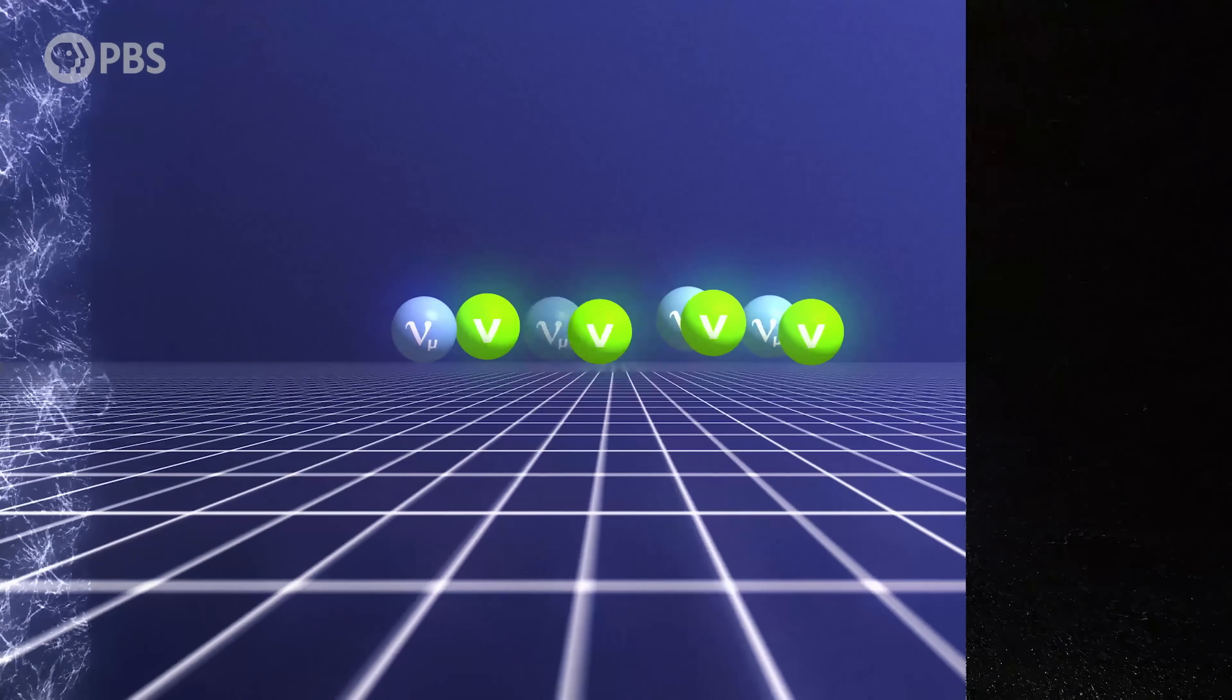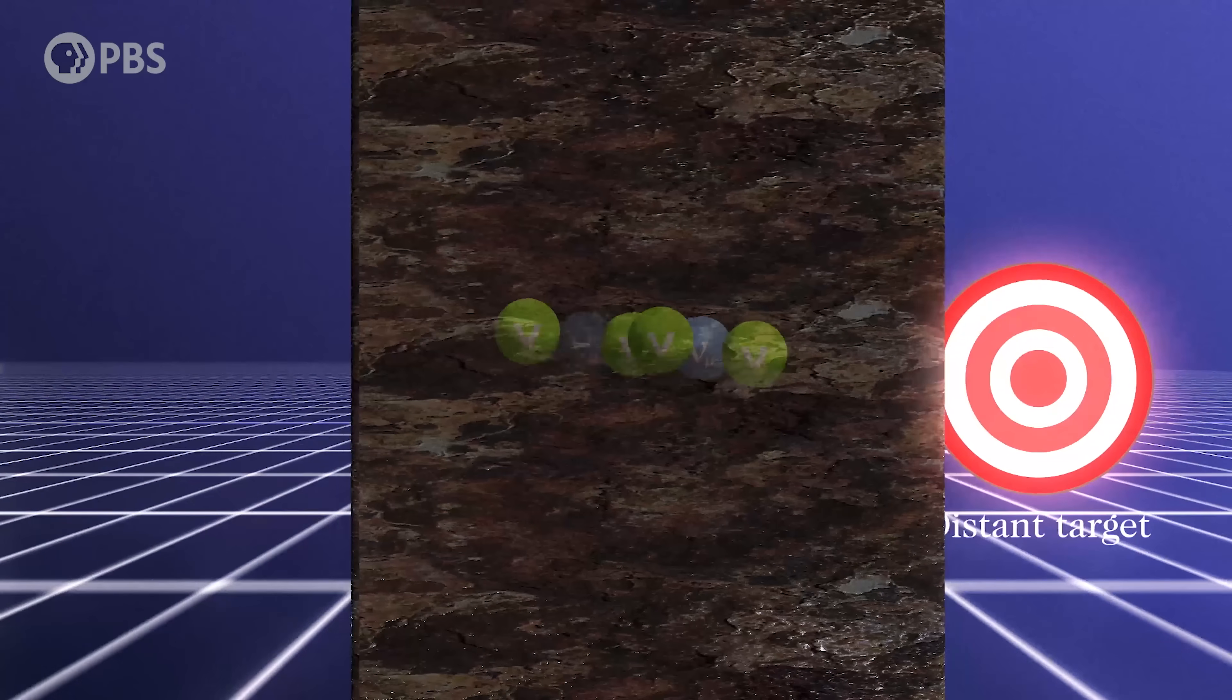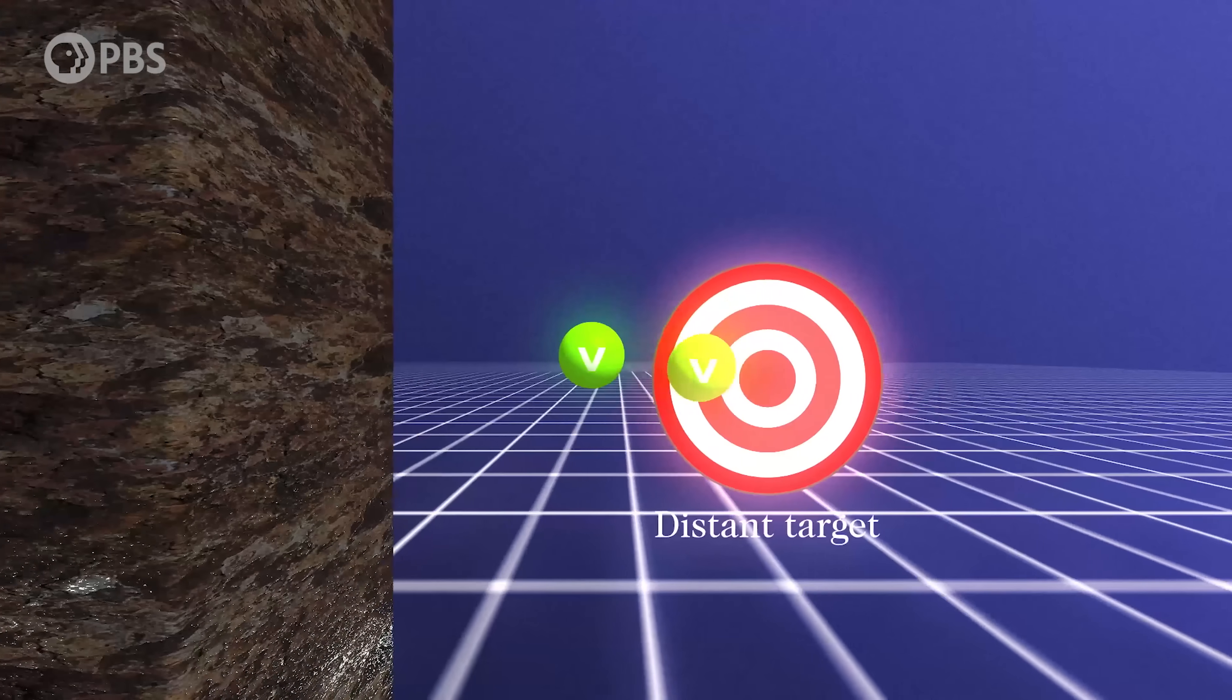Those pions quickly decay into muons and muon neutrinos. The beam then passes through several hundred meters of solid rock, which blocks the muons, but the neutrinos pass straight through into an almost pure beam of muon neutrinos, ready to be sent to our detector.